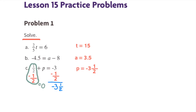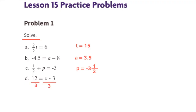The value for p is negative three and a half. Part d: 12 equals x times three. To get x by itself, we divide both sides by three. The right side equals 1x, or x, and the left side is 12 divided by 3, which is 4. So the value of x is 4.